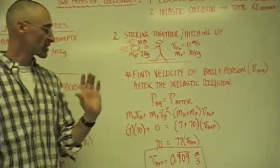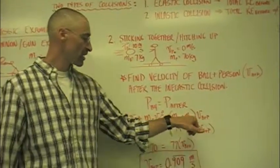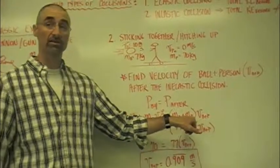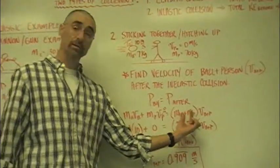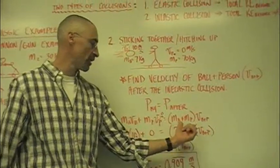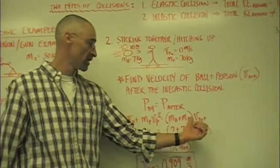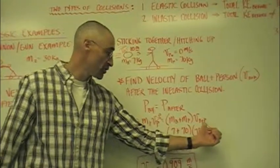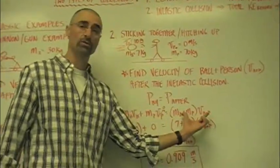Now, afterwards, and this is the hard part for some kids. Afterwards, because the masses stick together, we have to actually add them together into one new mass. So, we take the mass of the ball plus the mass of the person times their new velocity, and that's going to be equal to the momentum after.